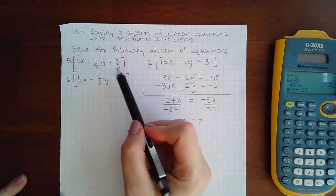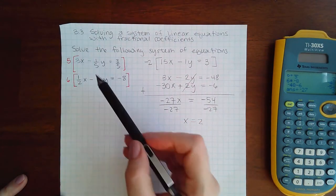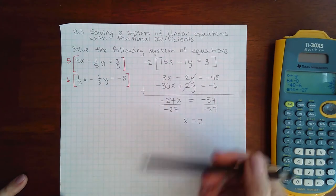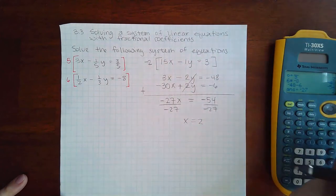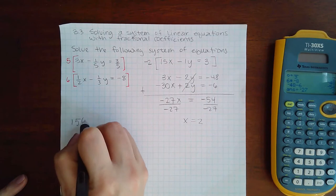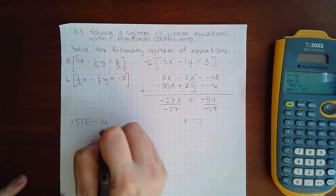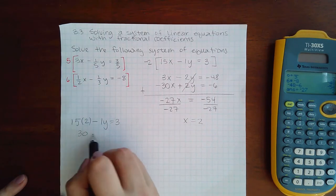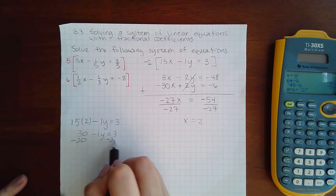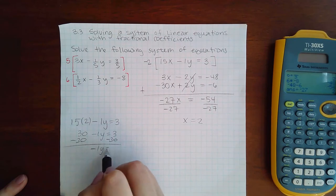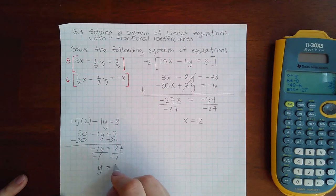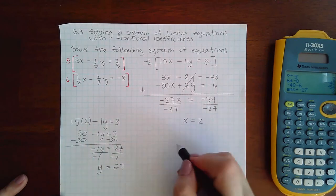But again, you could plug it in here, but assuming that this is correct for the top one and this is correct for the bottom one, you could plug it into one of the new ones. I'm going to plug it into what I have there in the bracket, so 15 times 2 minus 1y equals 3. That's 30 minus 1y equals 3. Negative 1y equals negative 27. Divide by negative 1, I get y equals positive 27.